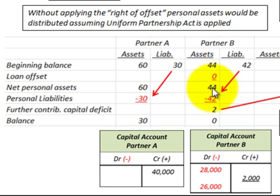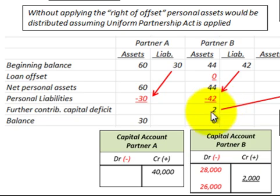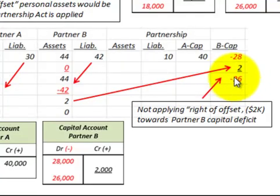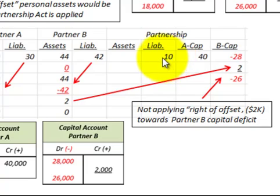So partner B ends up with net personal assets of $44,000 minus personal liabilities of $42,000, leaving $2,000 remaining in their asset account. That $2,000 is applied towards their capital deficit. They had a capital deficit of $28,000, so applying the $2,000 leaves $26,000 as the remaining deficit. The partnership liability of $10,000 loan payable to partner B remains. Not applying the right of offset, only $2,000 would be applied towards partner B's capital deficit.